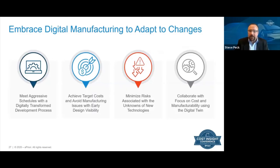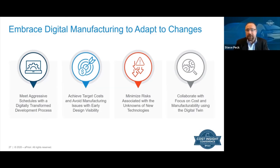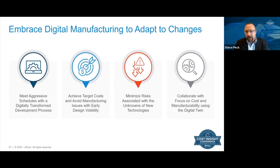And with all of that said, with the challenges of electrification, light weighting, and the need to address compressing schedules, it's really all about embracing the digital thread and digital manufacturing to adapt to these changes. Making sure you can meet those aggressive schedules with a digitally transformed development process, achieving target costs, avoiding manufacturability issues early, minimizing the risks associated with those unknowns, and enabling collaboration across the enterprise — leveraging the digital twin.